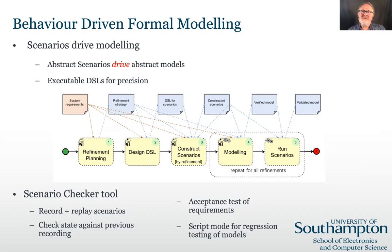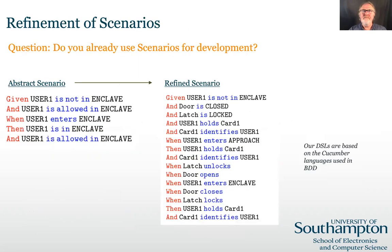To support this approach, we have developed a scenario checker tool for animating the model based on the PRO-B model checker's animation mode. The scenario checker can then check that the model behaves in accordance with the scenario. Other animation visualisation tools such as the UMLB state machine animation can be used in conjunction with the scenario checker to help visualise the state. Here's an example of an abstract and refined scenario written in our Cucumber-based DSL for an entry control system. At the abstract level, the scenario simply focuses on whether or not a user is allowed access. The refined scenario replaces high-level requirements with the behaviour of the components that achieve the desired security.